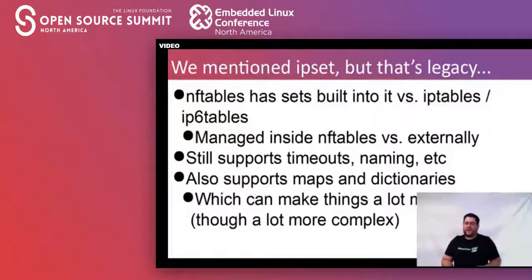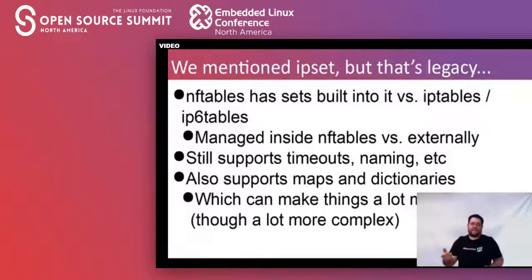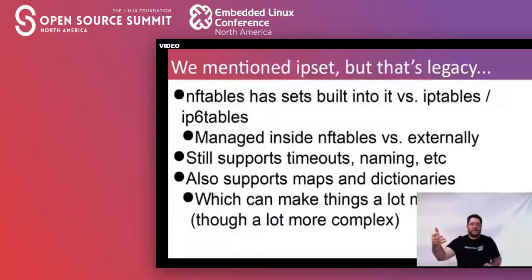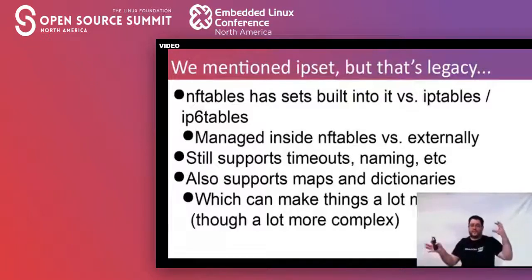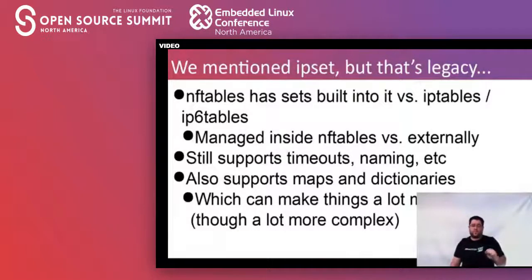I mentioned IP set earlier and how it delayed things with NF tables. With NF tables, you actually don't need IP set anymore because NF tables already has the same basic functionality baked into it, and in fact it goes a couple steps further in the types of dictionaries and mappings it can do. IP set is very specific — it's basically an IP address sometimes with an expiration and a long list. NF tables gives you full maps and full dictionaries that you can use to build these complicated IP lists, and they're already built in. So you don't have to treat this as a separate piece to the rest of your firewall, the way you would have to with IP set.